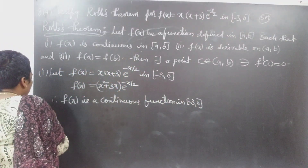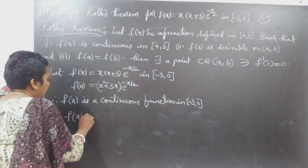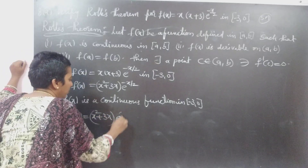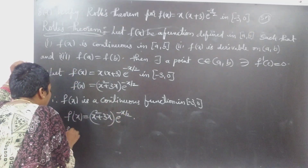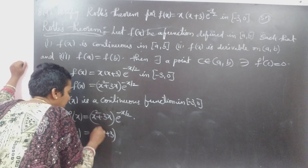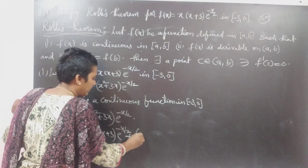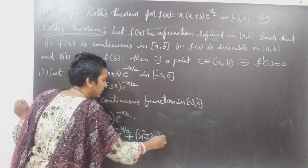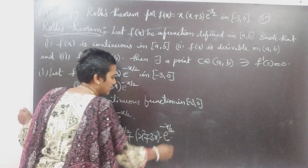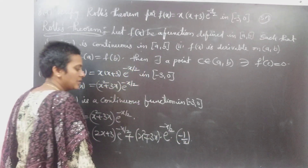Next, second condition: we can differentiate the given function. It is in UV form. F(X) is equal to (X² + 3X) into e^(-X/2). F'(X) is equal to first U derivative, that is (2X + 3) into e^(-X/2), plus V derivative: U is written as it is, V derivative of e^(-X/2) — the derivative is e^(-X/2) and the derivative of (-X/2) is (-1/2).